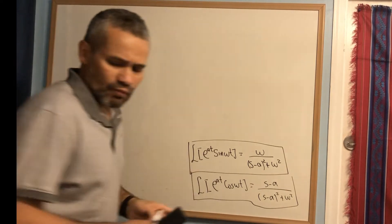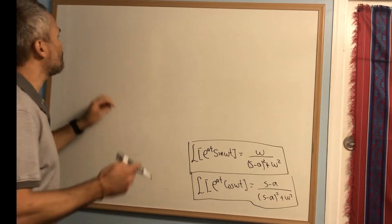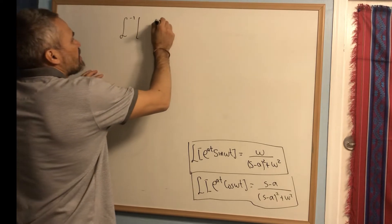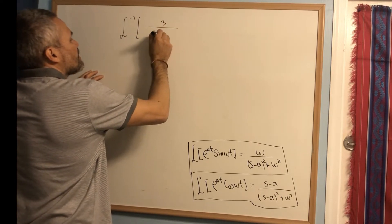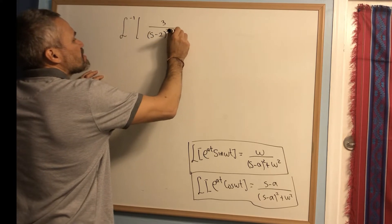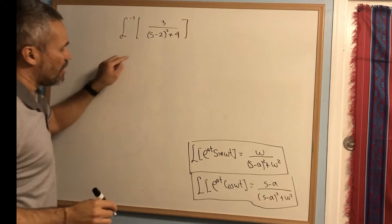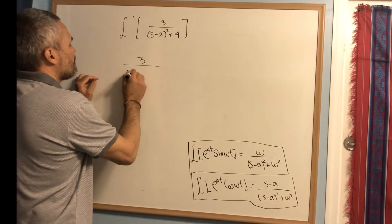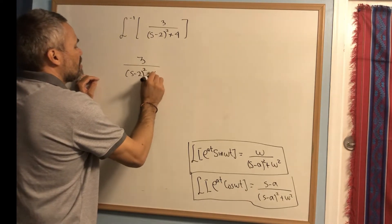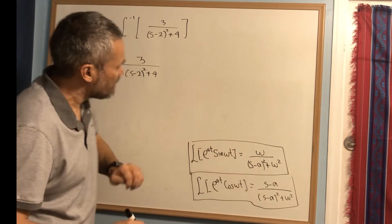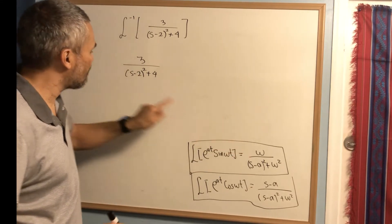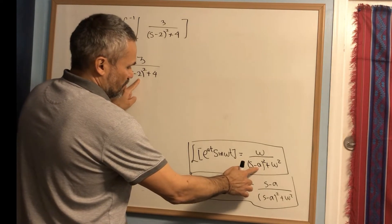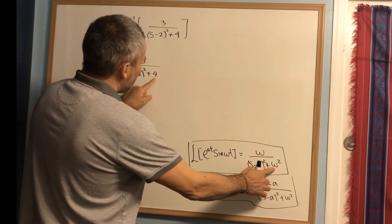Let's compute the inverse Laplace transform of 3 over (s-2)(s²+4). We want to write this expression to match the right-hand side of our formulas. Looking at the denominator (s-2)² + ... we compare and identify a = 2 and ω = 2, since ω² = 4.